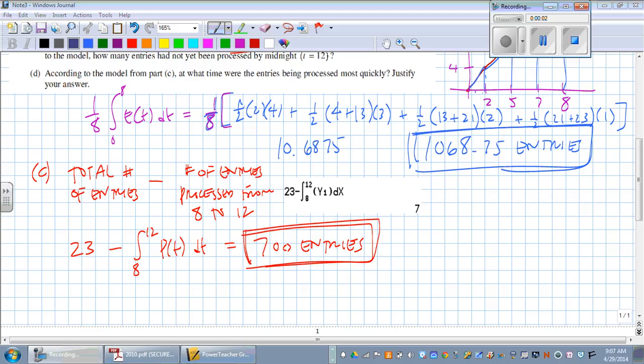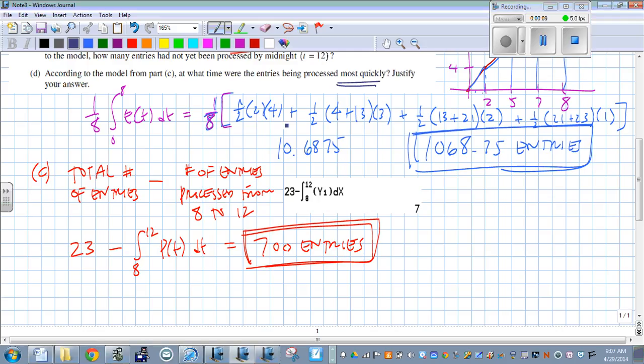Part D. According to the model from Part C, at what time were the entries being processed most quickly? Justify your answer.